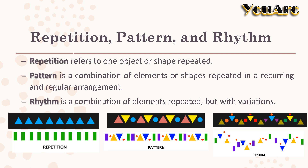Let's see what is rhythm. Rhythm is a combination of elements repeated but with variation. There is a very minor difference between pattern and rhythm. Both are a combination of elements or shapes repeated, but pattern is in a regular arrangement while rhythm is with variation. Hope you can easily understand these three principles with the image below.